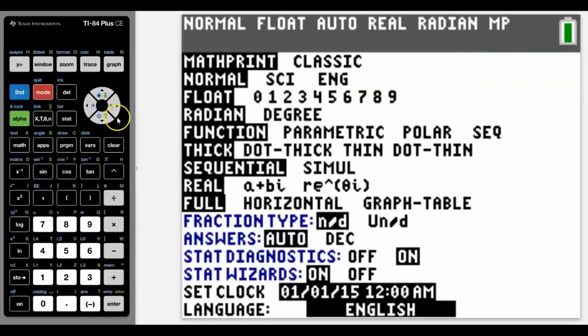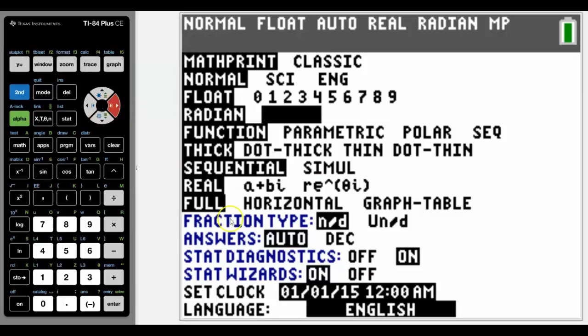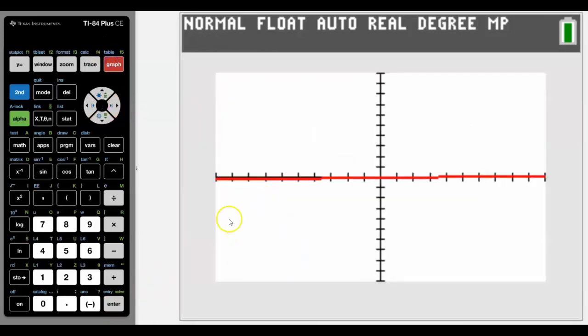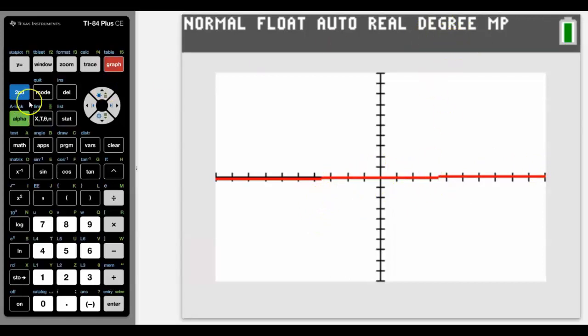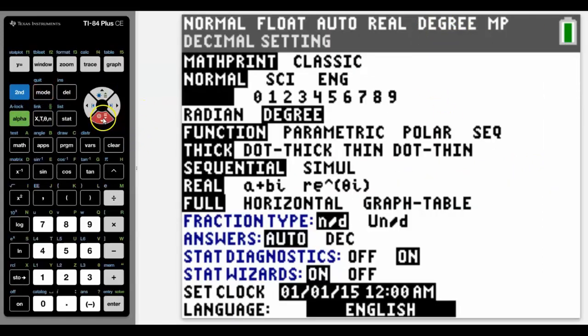A lot of times when you're graphing stuff for trig, you may already be in degrees mode, and therefore it just doesn't look right. Something's wrong, and that's because of the mode that you're in. So make sure for lots of the trig stuff that you're doing that you're in radians mode.